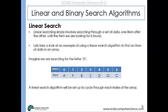Simply look in index zero first and compare D with the contents of that location — an A. They don't match, so we increment the index by one. F doesn't match, B doesn't match, E doesn't match. We move on to index four, D is compared with the contents — it is a D — so because those two match we know we've found the item and the search stops.